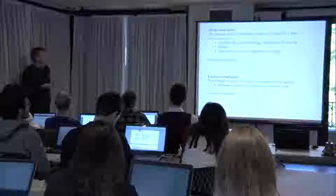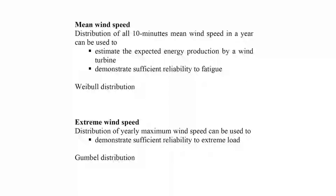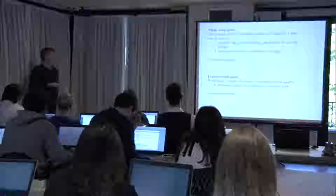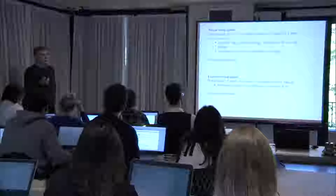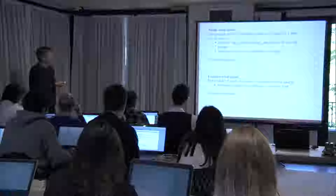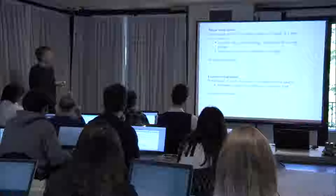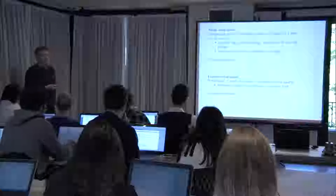For mean wind speed, there are two modeling needs. For fatigue calculations and wind turbine energy production, all wind data over the whole lifetime are used, typically modeled by a Weibull distribution. For extreme wind, a Gumbel distribution is used, as mentioned earlier.